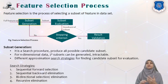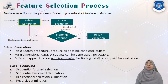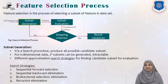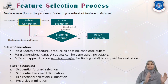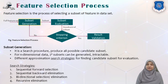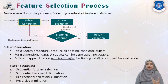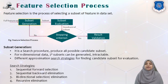Search strategies used are sequential forward selection, sequential backward elimination, bi-directional selection or elimination, and recursive elimination. In sequential forward selection, our search starts with an empty set and we keep adding one feature at a time from the actual feature set to our subset. In sequential backward elimination, our search starts with the complete set — say all 10 features — and from the back side we keep eliminating one feature at a time and check its goodness.